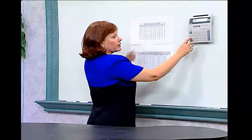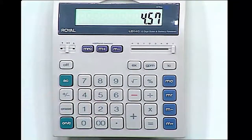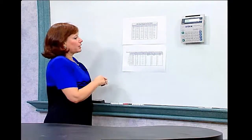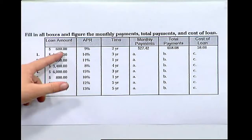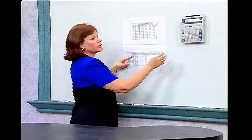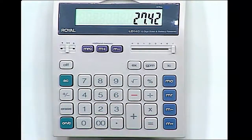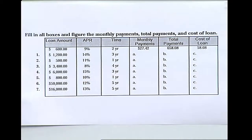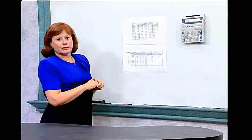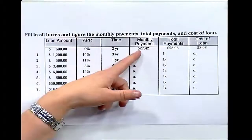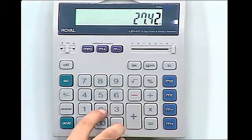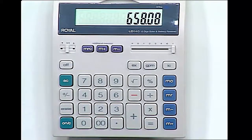We find out that the cost per $100 on this loan will be $4.57 each month. We enter that into our calculator. It's a $600 loan, so we have six units of $4.57 each month, and we multiply by six. $4.57 times six gives a monthly payment of $27.42. Since this loan is over two years, we need to make 24 payments, so we take the payment and multiply by 24, getting a total cost of the loan of $658.08.